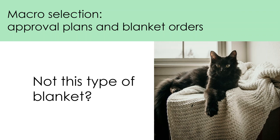Blanket orders are another useful tool. Blanket orders allow us to get all resources published by a given author or all titles that appear on a particular award shortlist. For example, if you had a standing request for anything published by J.K. Rowling, this could be covered by a blanket order. Similarly, a library might indicate that it wishes to receive five copies of every title that makes it onto the Children's Book Council of Australia shortlist each year.